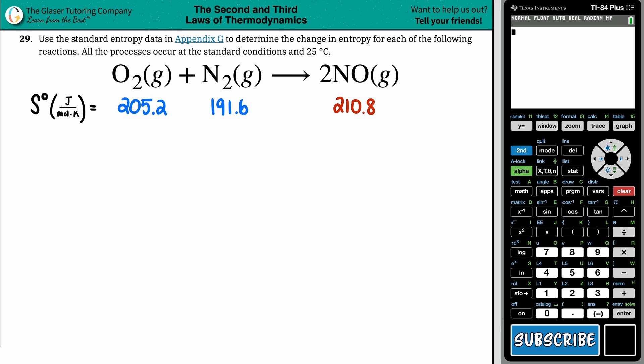Number 29. Use the standard entropy data in Appendix G to determine the change in entropy for each of the following reactions. All the processes occur at the standard conditions at 25 degrees Celsius. So we have our reaction right here.